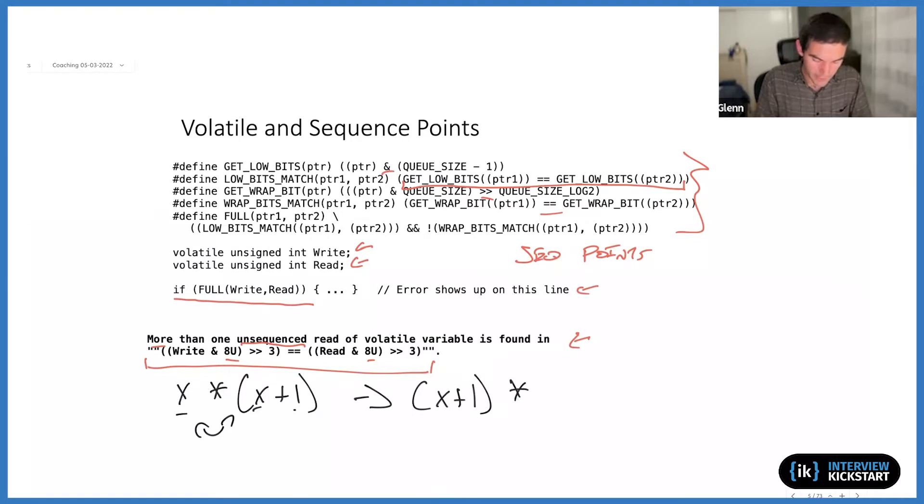The compiler would normally be allowed if it was interested in reordering this such that it did this first and then multiplied by X. Mathematically, these are the same. And because they're mathematically the same, the compiler is allowed to reorder these in any way it sees fit, including this way, if it thinks it's going to be more efficient to do it this way.